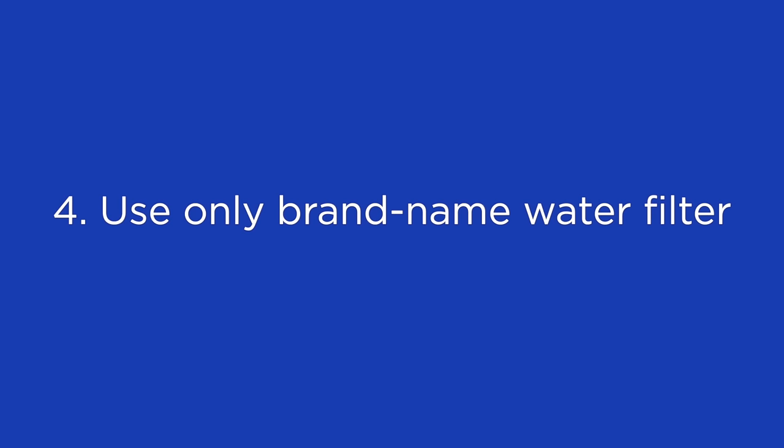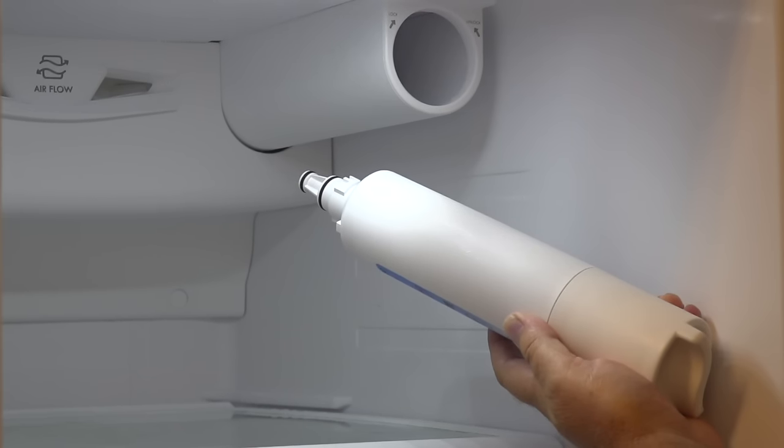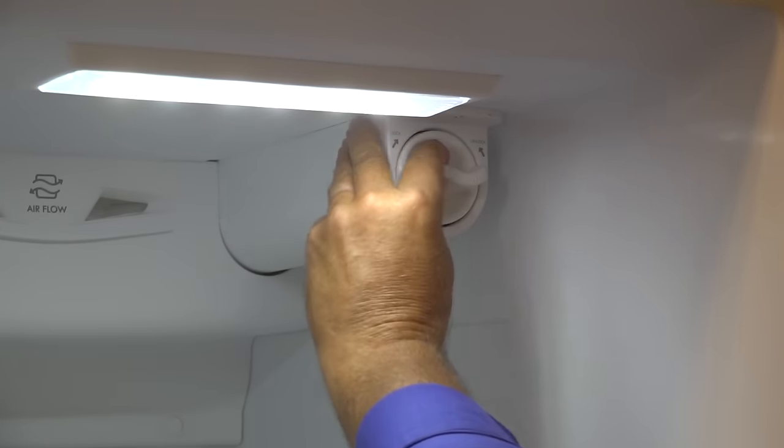Use only the original manufacturer replacement water filter. Inexpensive, aftermarket water filters can get stuck because they aren't made to the same specifications as ones from the manufacturer. These knockoff water filters can damage water seals and fittings in the water filter housing, making it difficult to remove or install the filter.